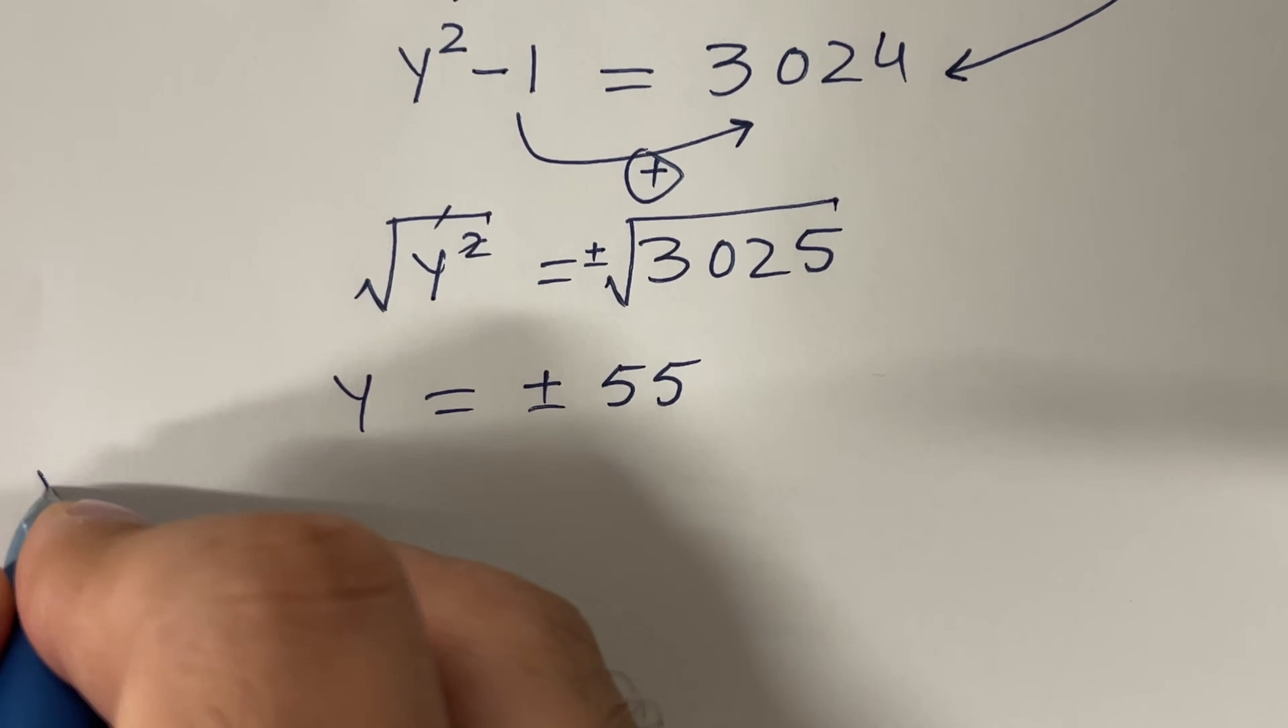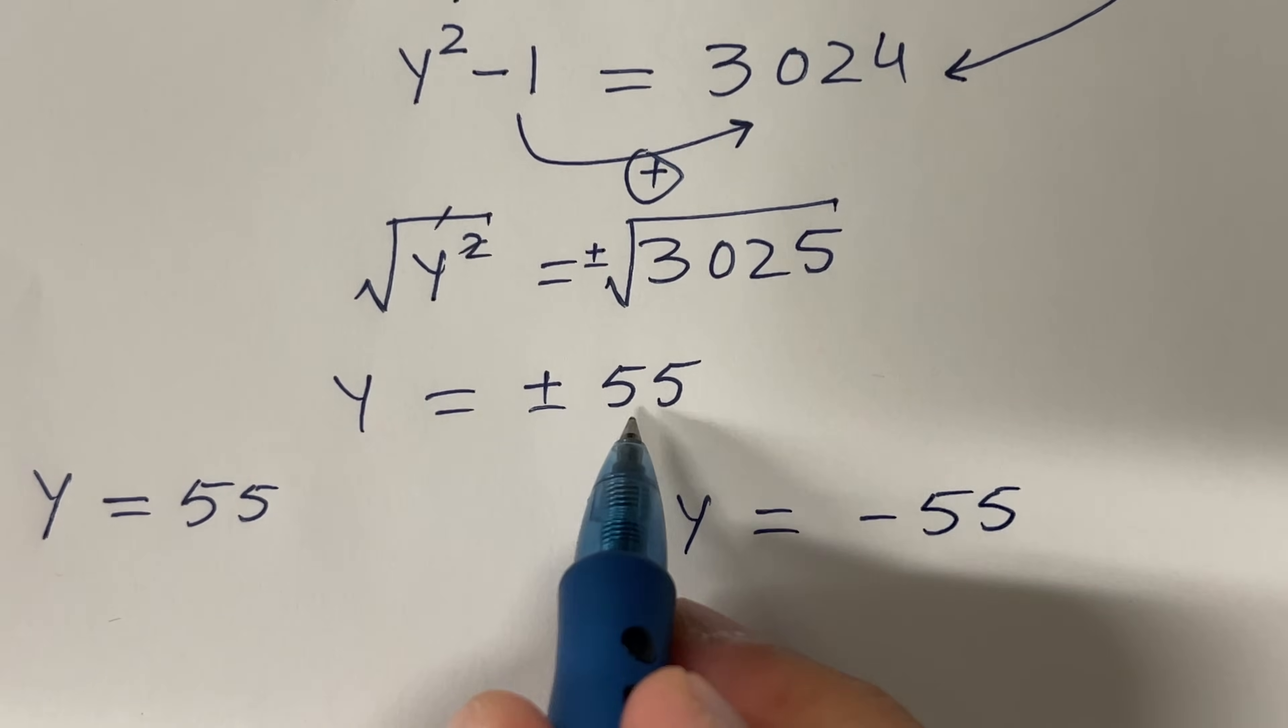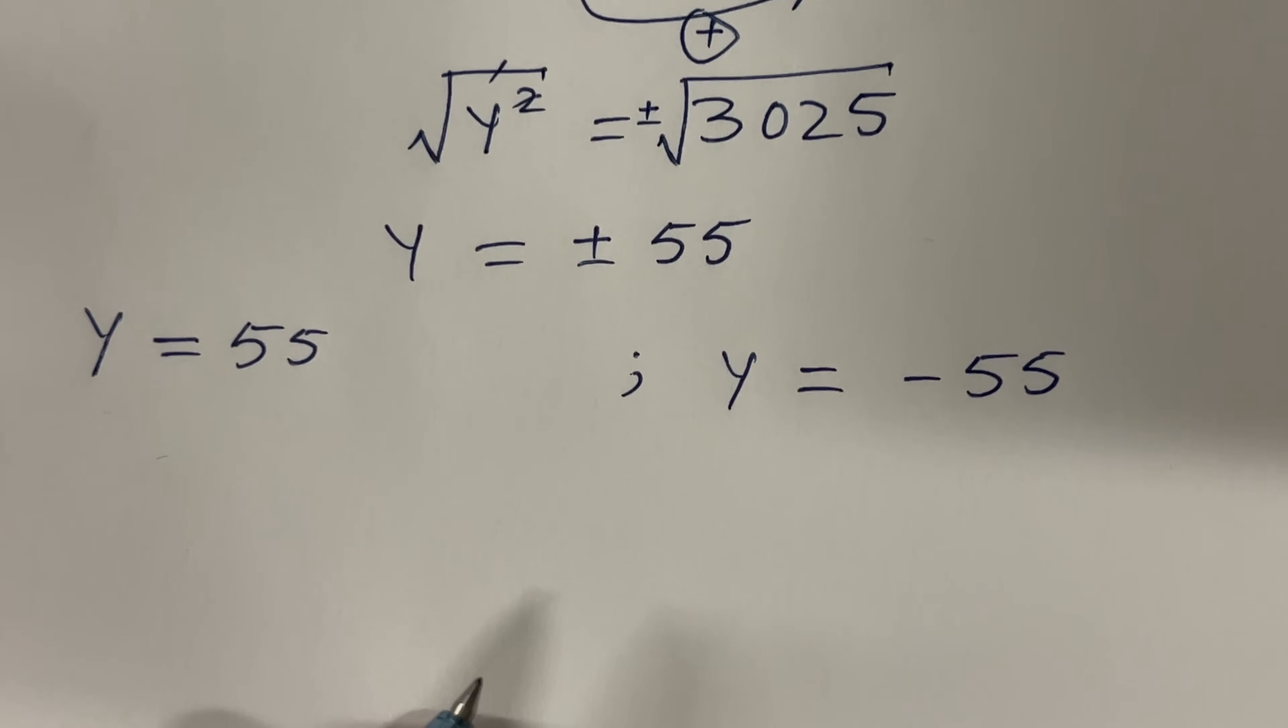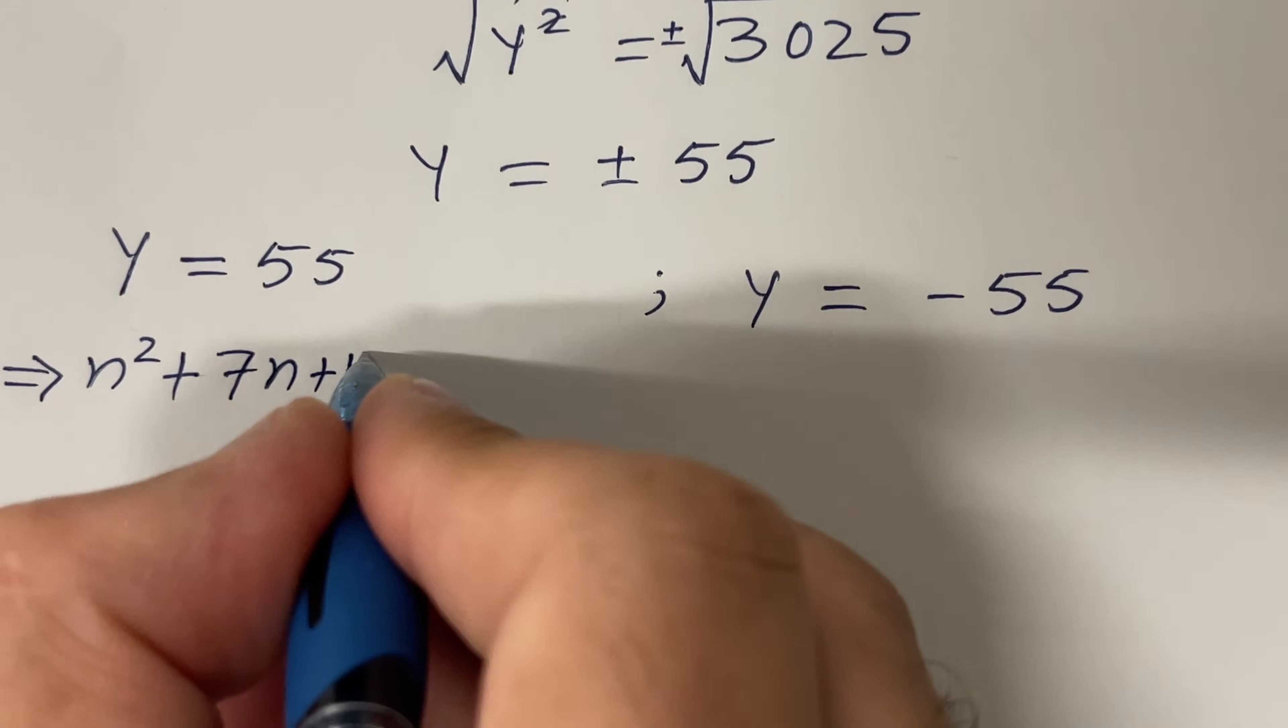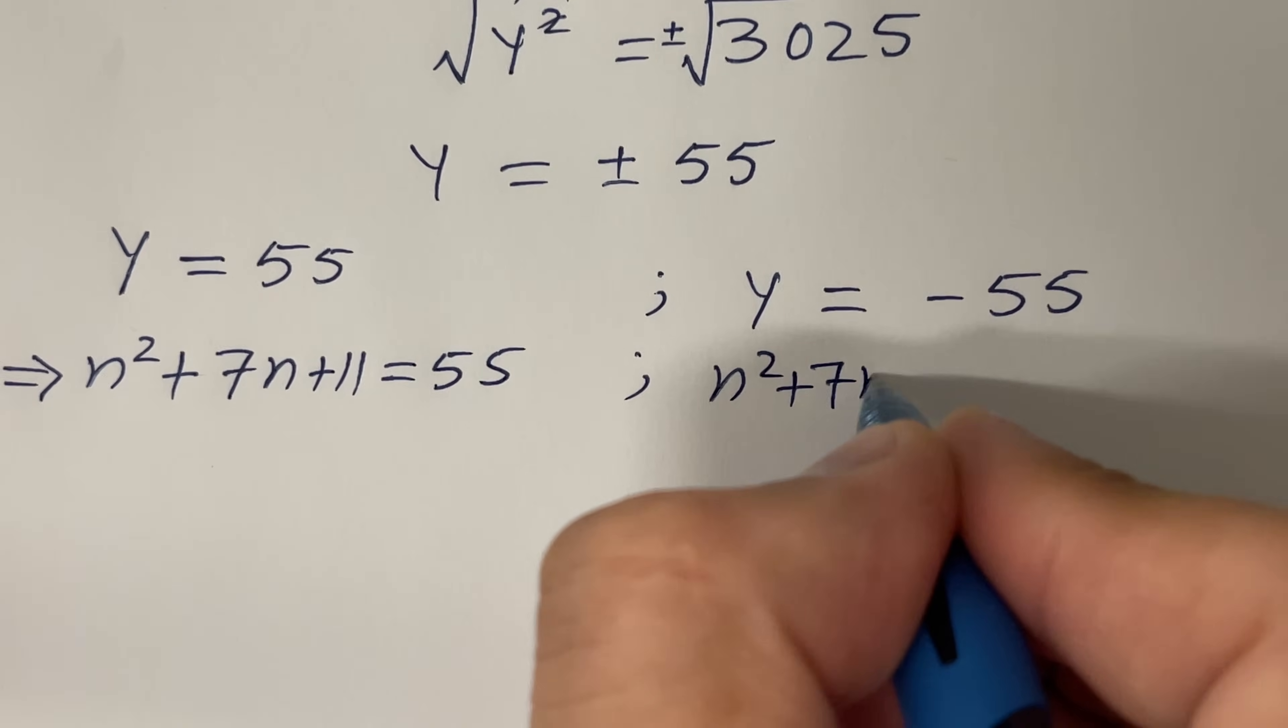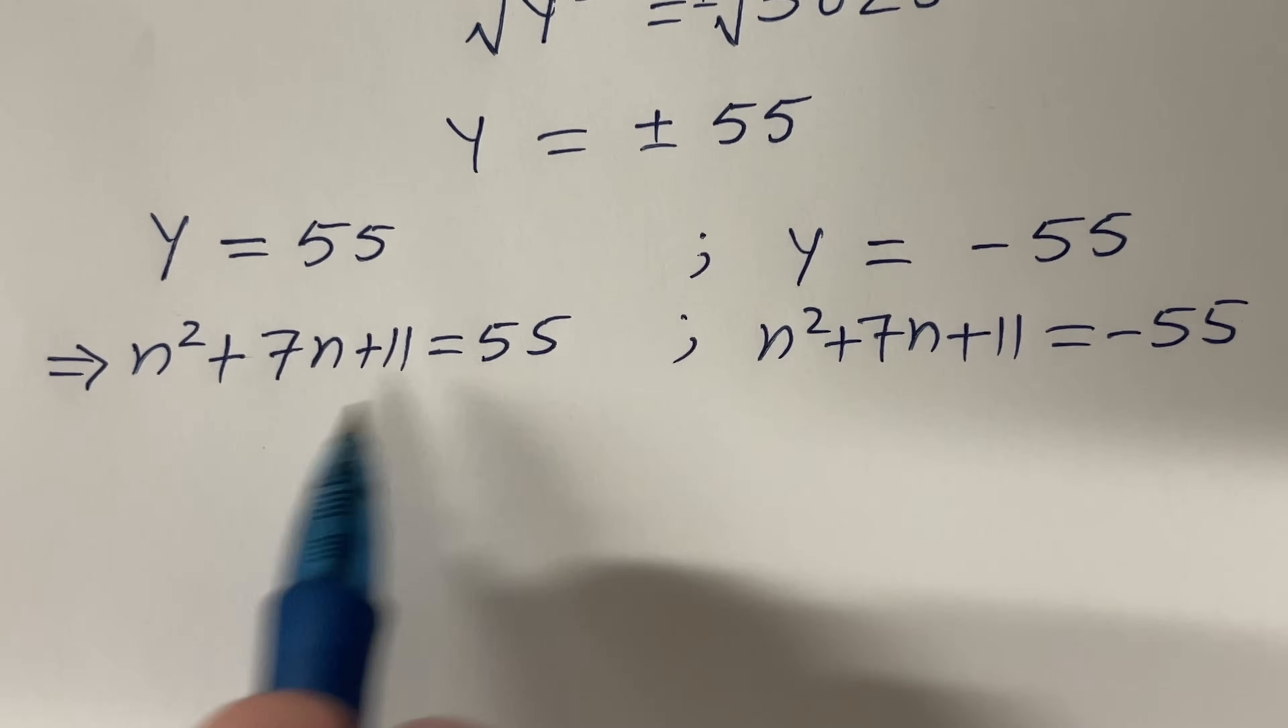But before that, let me write both the answers. So what was y equal to? 55 and y equal to -55. Negative 1 here and positive 1 here. And what was y? n² + 7n + 11. So it means that we have n² + 7n + 11 = 55 and n² + 7n + 11 = -55. And we have to solve these equations.